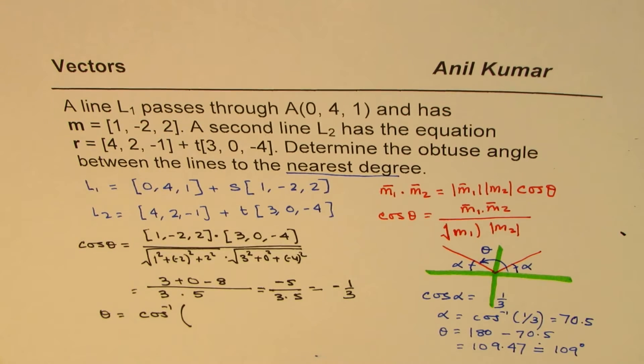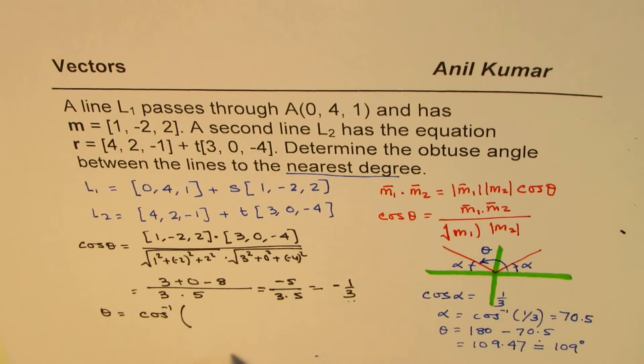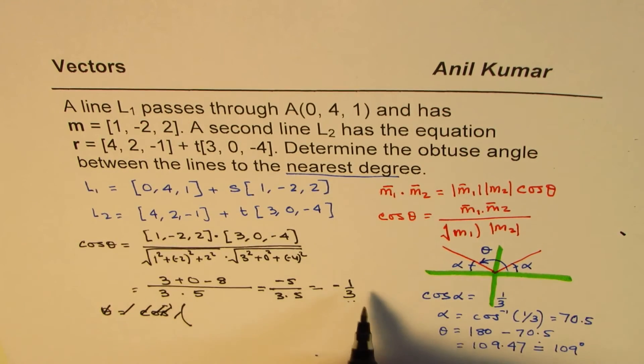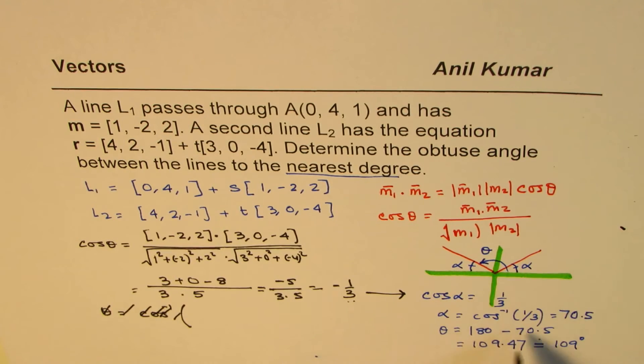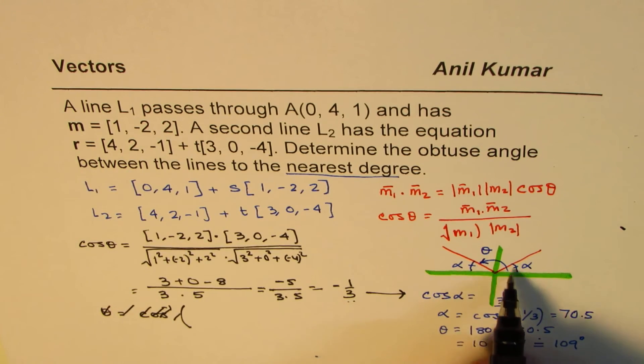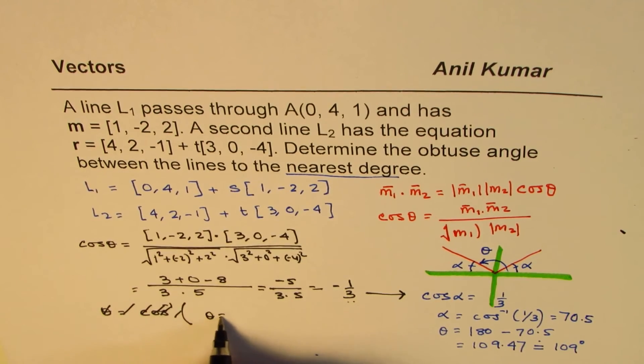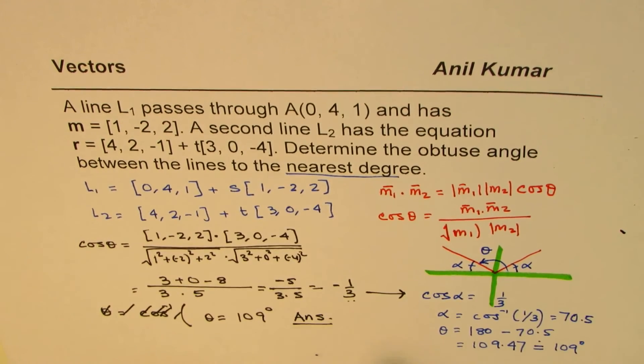So instead of finding theta directly from here, we need to find cos inverse of this angle. So I am kind of changing this from here. So we will move in this direction. We will find the related acute angle and then the obtuse angle, which is required. So we say theta is equals to 109 degrees. So that is the answer for us.